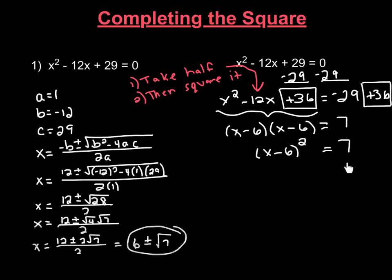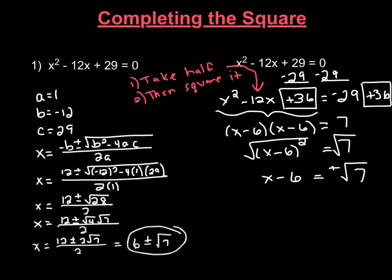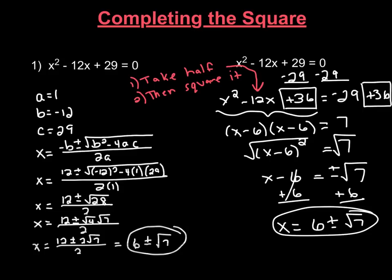Now what we want to do is we want to take this equation and solve it for x. So in order to get rid of a square, we're just going to take the square root of both sides, and on the left side, a square and a square root cancel each other out, leaving us with x minus 6. Now on the right-hand side, remember, when you're taking the square root of something, this exponent of 2 tells you that there's going to be two answers. So we're going to have a positive radical 7 and a negative radical 7. Then to get x by itself, we would just add 6 to both sides, leaving us with x equals 6 plus and minus radical 7, which is exactly what we got when we did the quadratic formula. So completing the square is just another method of solving a quadratic equation.